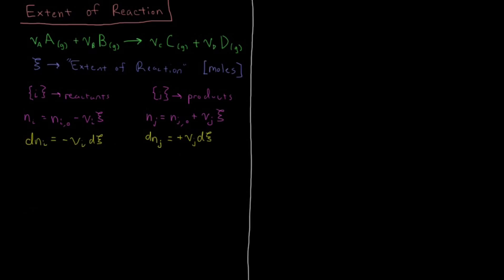The quantity of interest whenever we're talking about equilibrium — be it chemical equilibrium or any other kind — is the Gibbs energy. For our specific reaction A+B going to C+D, the Gibbs energy is a function of the number of moles of A, B, C, and D.